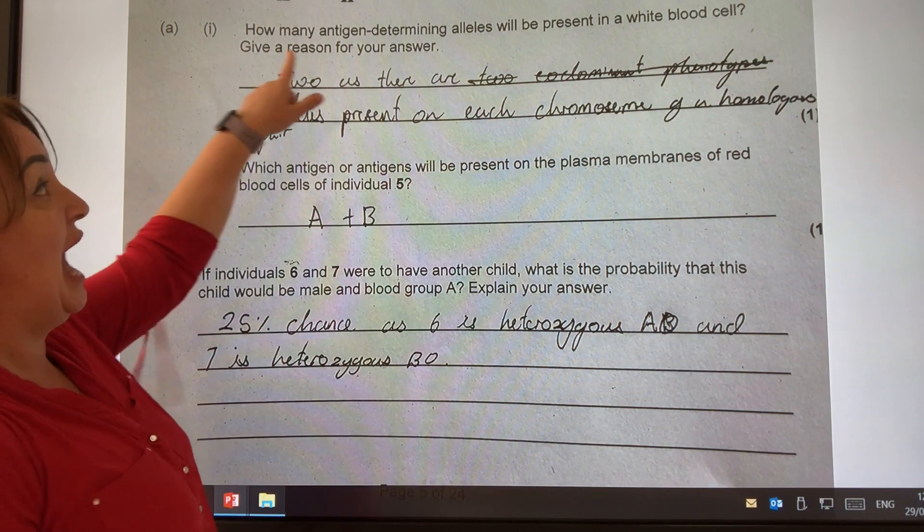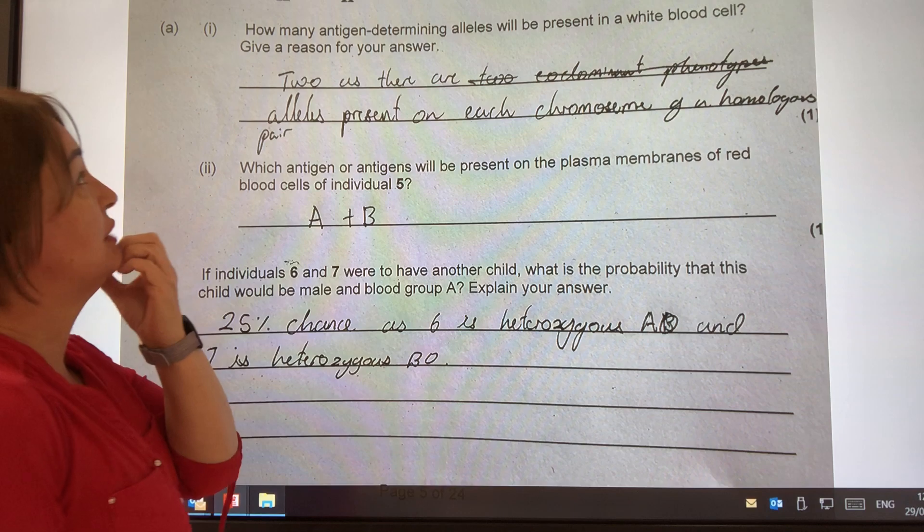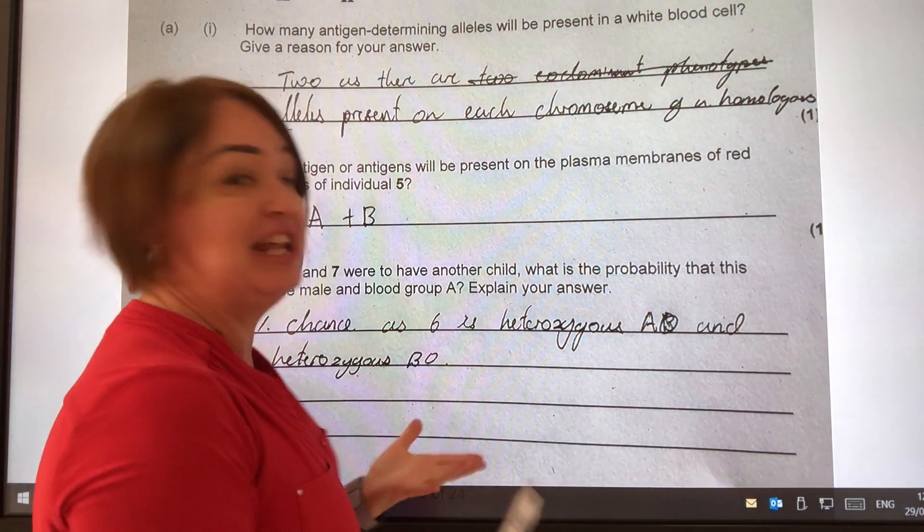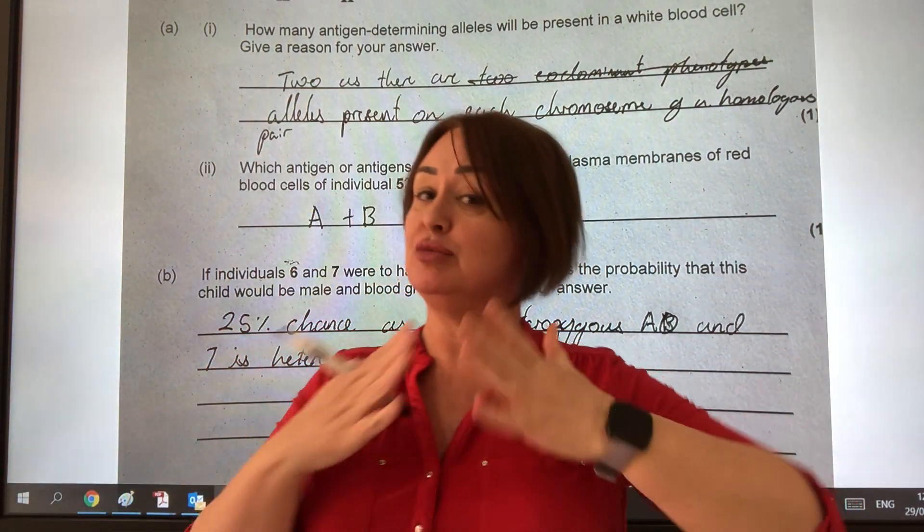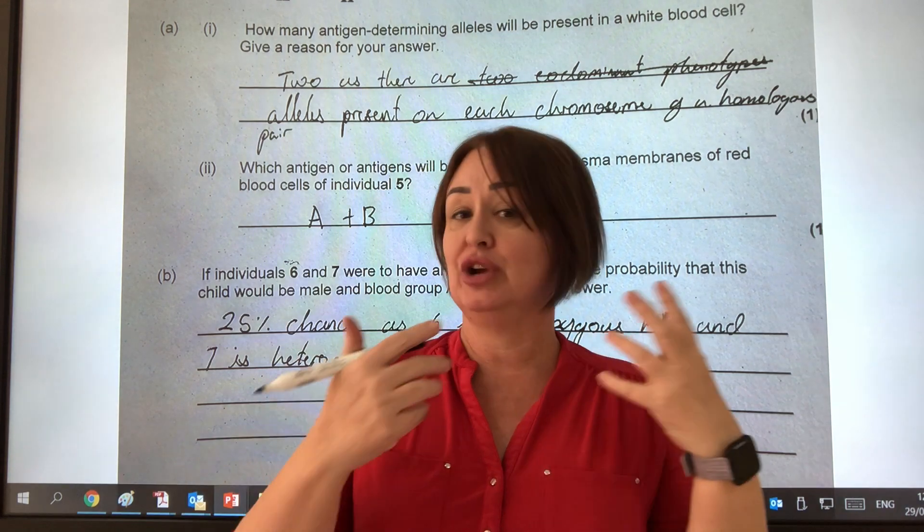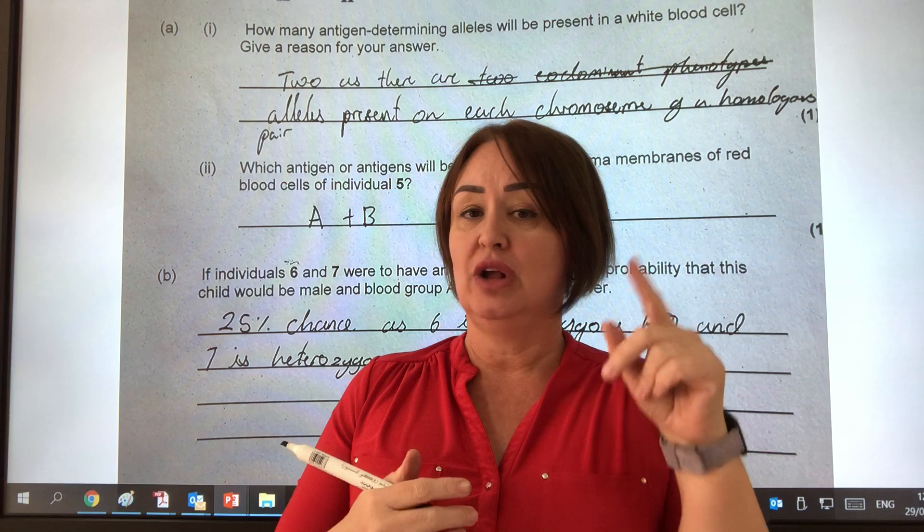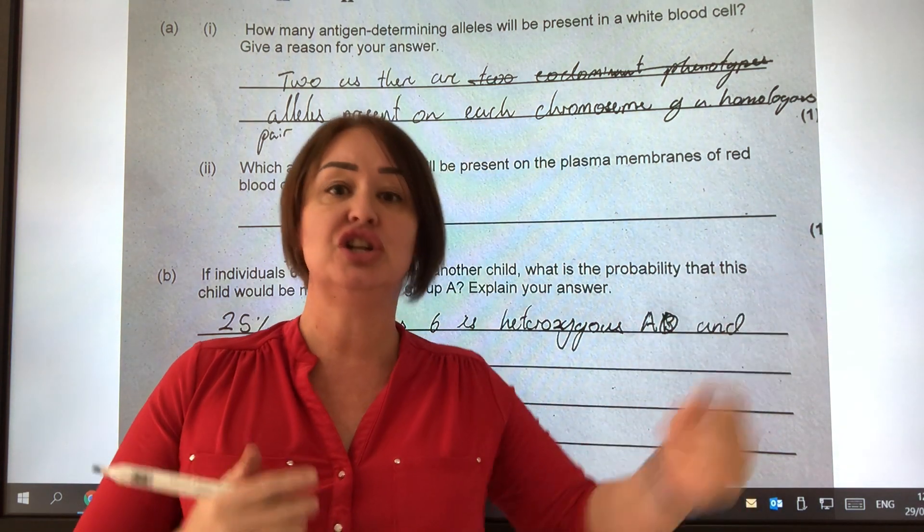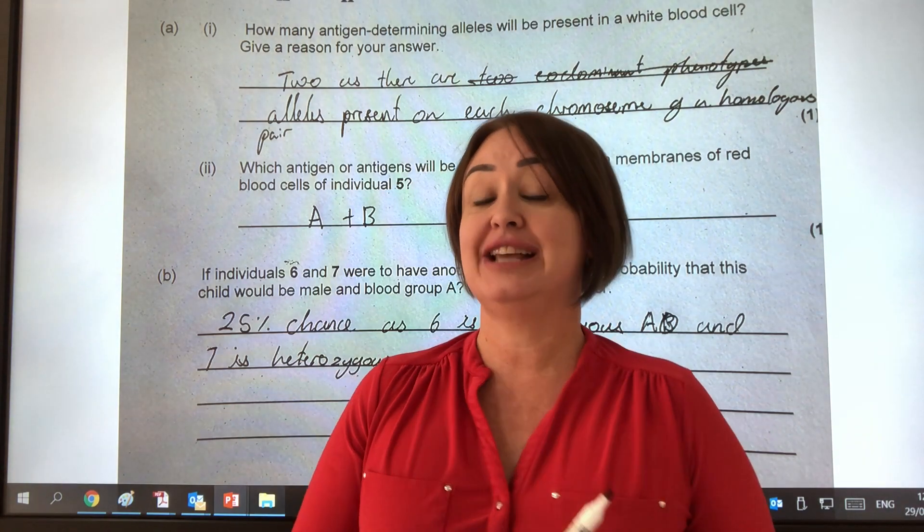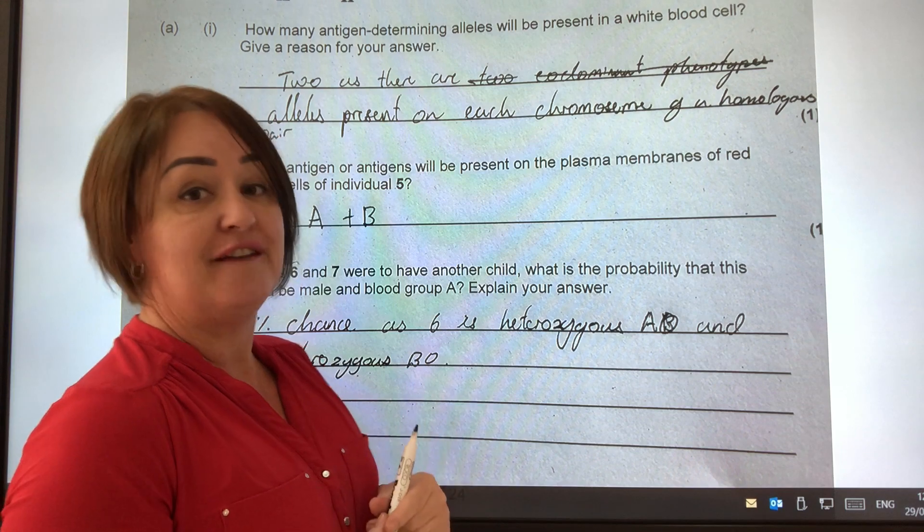Let's have a look at the questions that go with this. The first question says, how many antigen-determining alleles will be present in a white blood cell? Give a reason for your answer. You've got to do two things. You've got to give a number and you've got to give a reason. In any of our cells, our chromosomes come in pairs, and whatever it is they're coded for, an enzyme or an antigen on the surface of a cell, there are two codes, there are two alleles. So for the gene for the antigen, you've got two. Why? Because our cells are diploid. So that is actually the answer. We've got diploid cells, and that's why you would have two codes for the antigen.